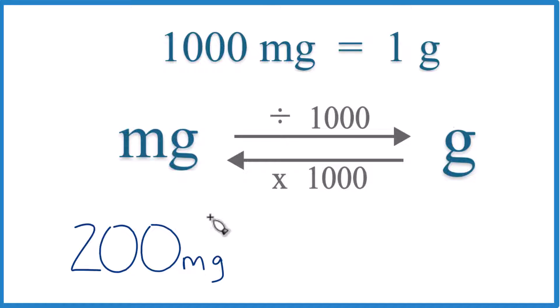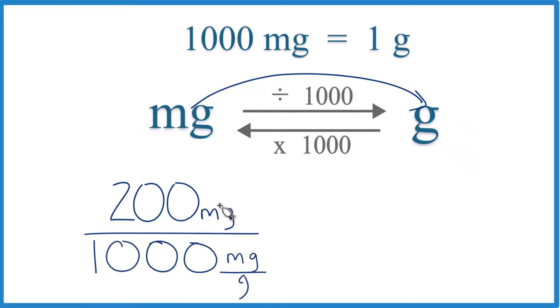So we have 200 milligrams, and we want to go to grams. That means we're going to divide by 1,000, like this. So essentially, we're just dividing 200 by 1,000, and that'll give us our answer.